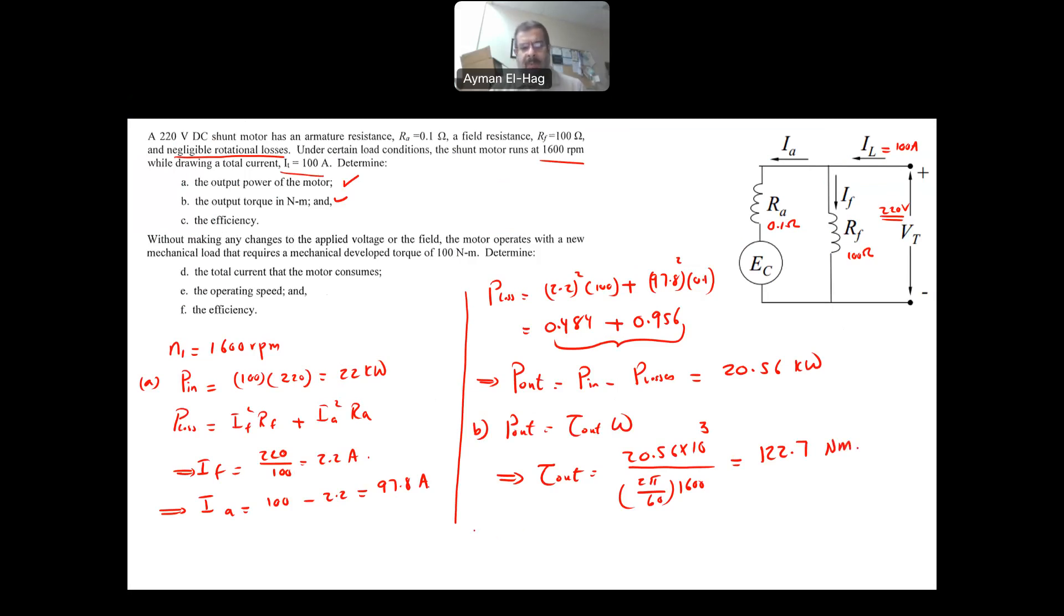Finally, we want to find C, the efficiency. It is basically Pout over PN. We have both, this is 20.56 divided by the P input, which is 22 kilowatt, and this will give me 93.45 percent. So that is your efficiency.